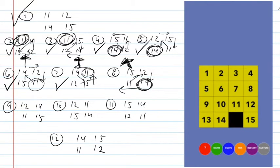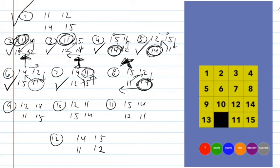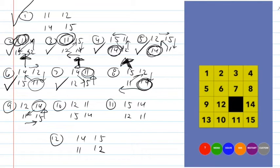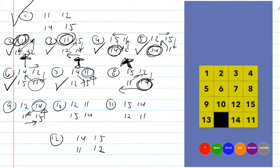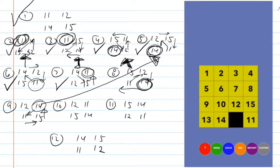Case four with fourteen in place: I need to cycle the eleven, twelve, and fifteen counterclockwise. I do that and case eight is done. In case nine, neither eleven nor fourteen is in the right spot, but since the fourteen is on the right-hand edge I get it to its spot by moving the twelve over with a counterclockwise three-cycle. That turns it into case five — fourteen in place — so I move it over and do a clockwise cycle on the eleven, twelve, and fifteen.